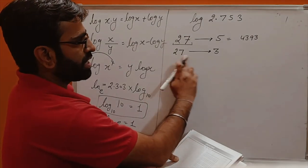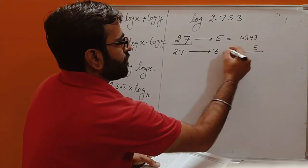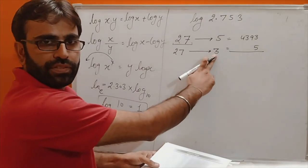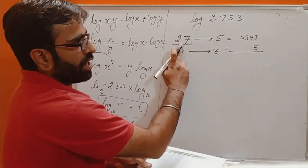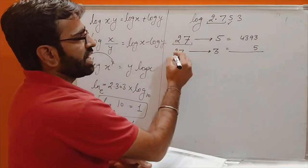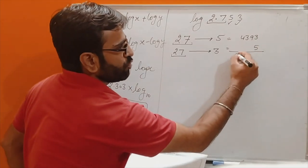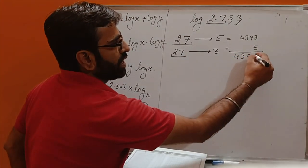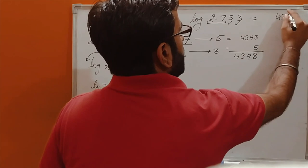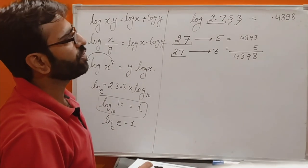The mean difference of 27 in column 3 is 5. The 3rd digit of the number gives the log value column, and the 4th digit uses the mean difference. We add these two values: 4393 + 5 = 4398. So we write 4398 with a decimal point before it, giving us 0.4398 as the mantissa.